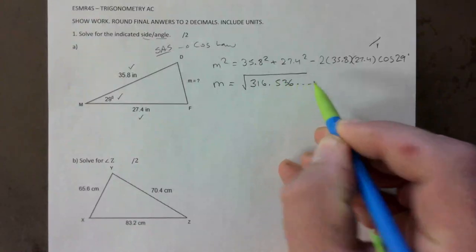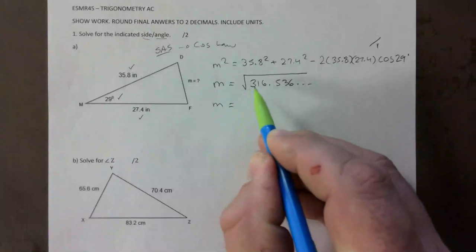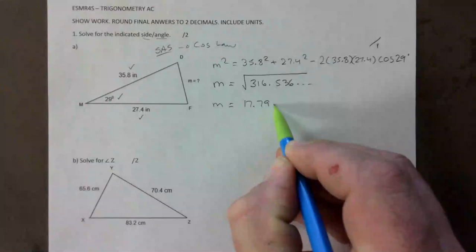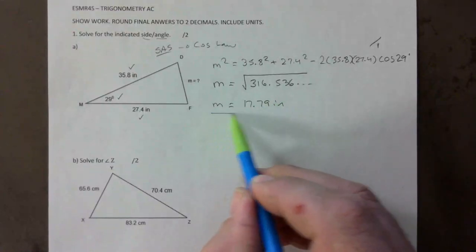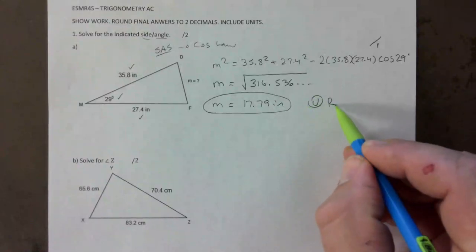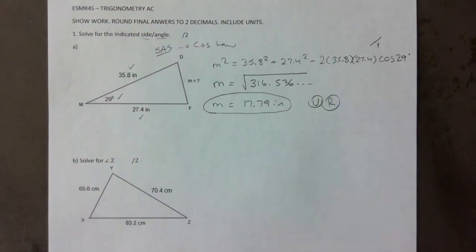536 and something. So taking the root of that gives you 17.79 inches. If you forgot units you put a 'u', if you didn't round correctly 'r', and then those would be half mark deductions at the end.